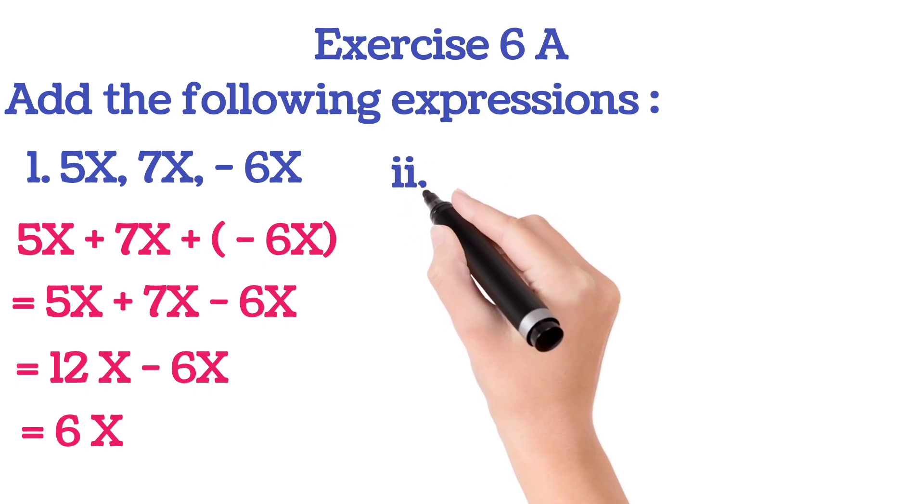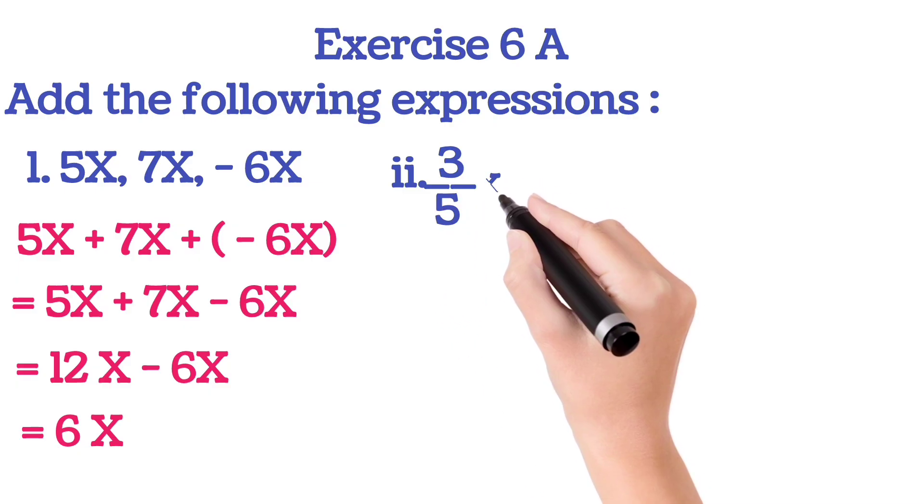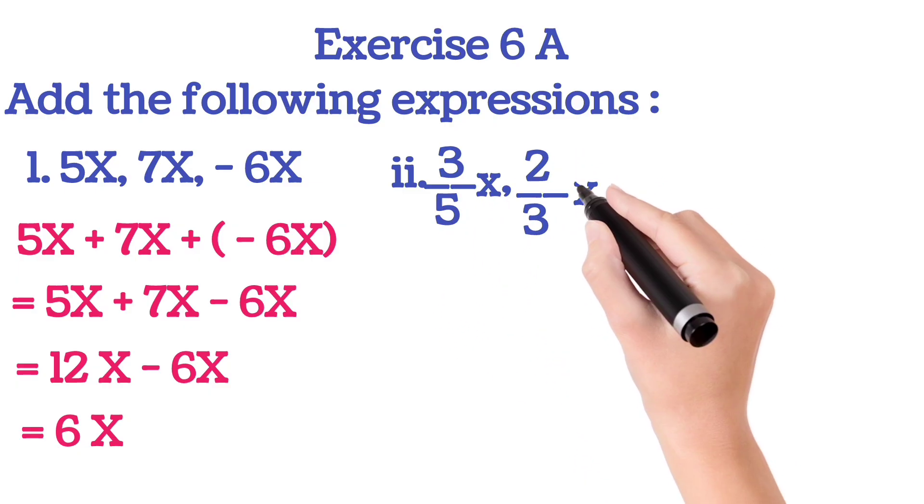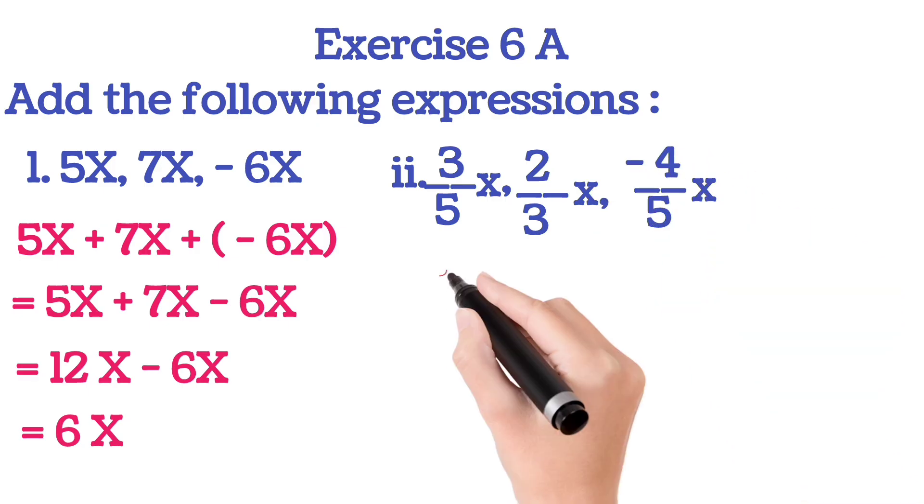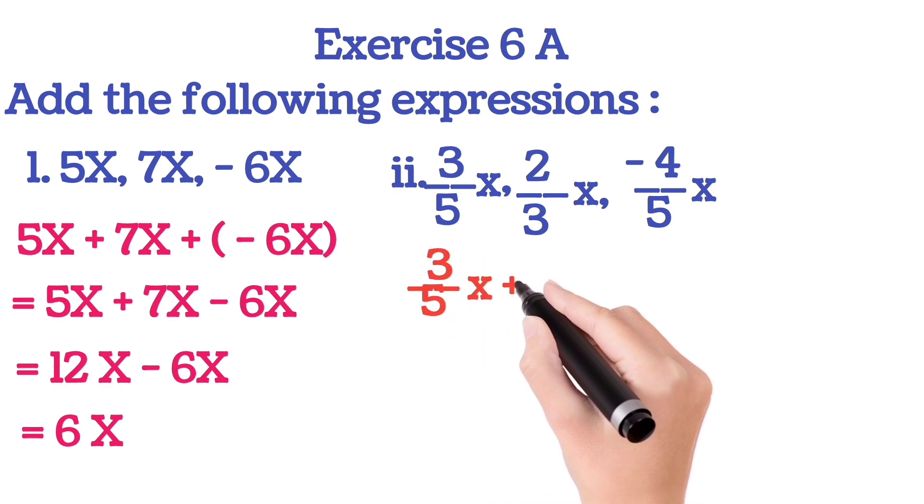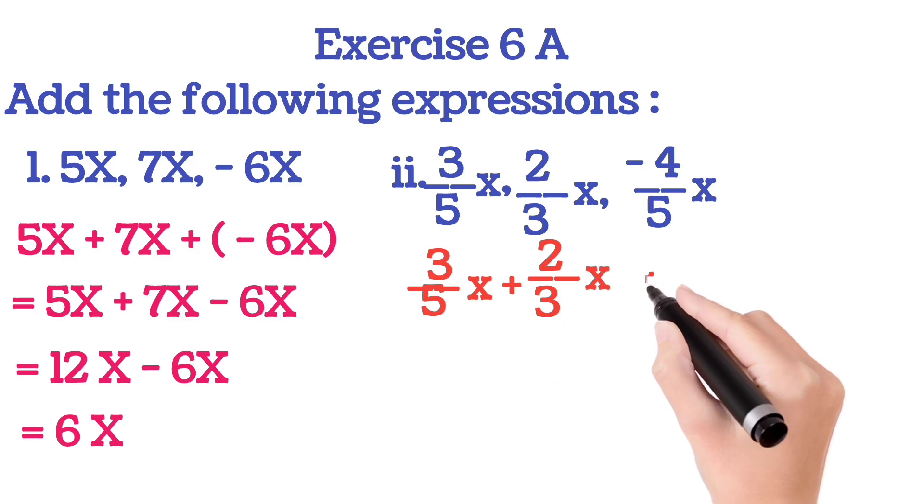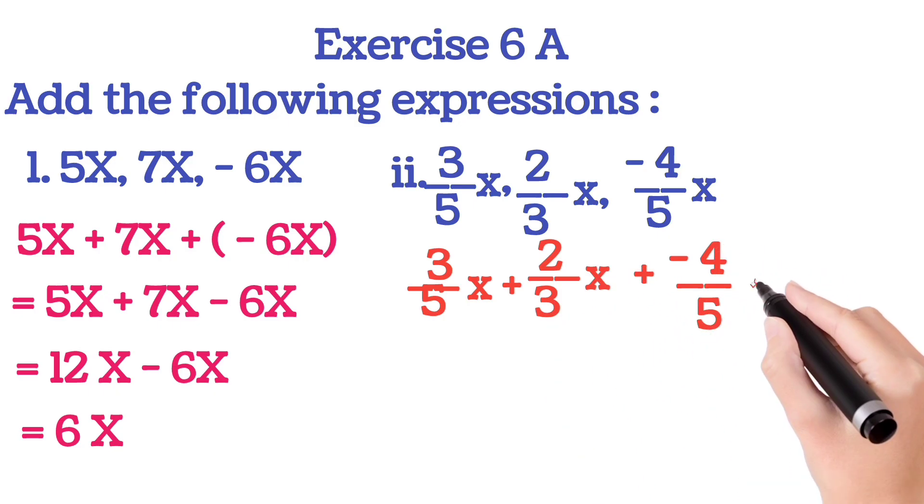That is sum number 2: 3/5X, 2/3X, minus 4/5X. Now all these three terms you write with plus sign. That is 3/5X plus 2/3X plus minus 4/5X.